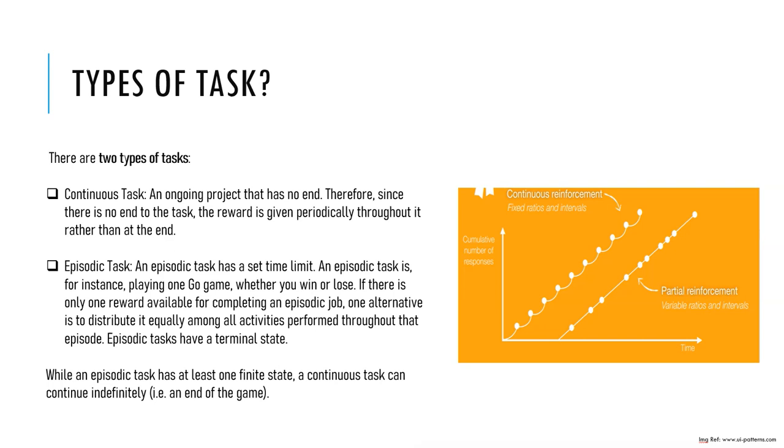In continuous task, the agent learns to balance exploitation and exploration to maximize reward over an infinite time horizon, while in episodic task the agent must learn to maximize within a fixed time frame. The choice of whether a task is continuous or episodic depends on the nature of the problem being solved.